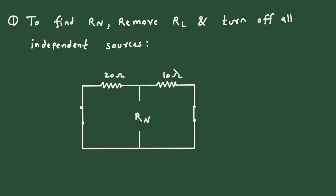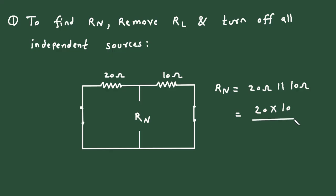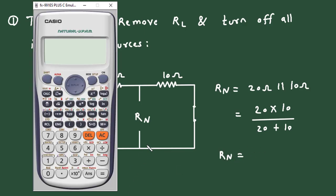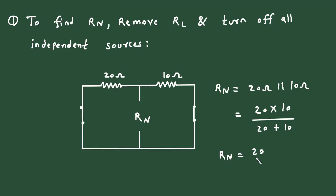Now we can see this 20 Ohm and this 10 Ohm are connected in parallel. So Rn is equal to 20 Ohm parallel with 10 Ohm, which is 20 multiplied by 10 divided by 20 plus 10. Therefore Rn is equal to 20 by 3 Ohm. This is the value of Norton's resistance.